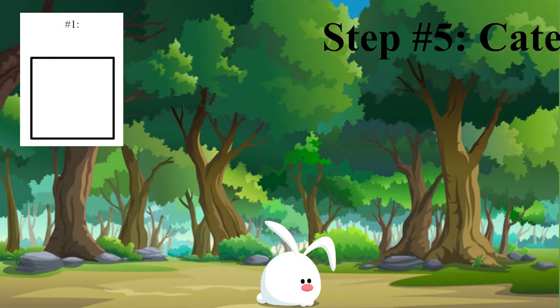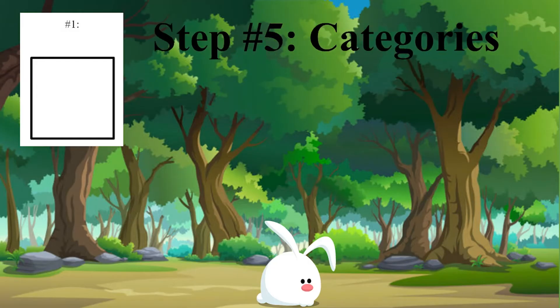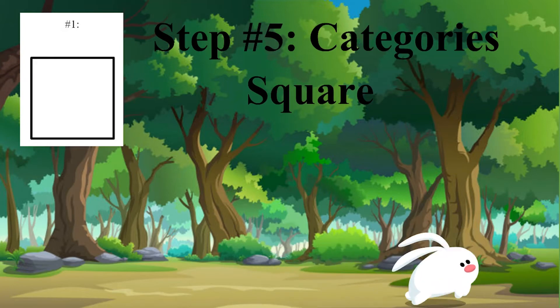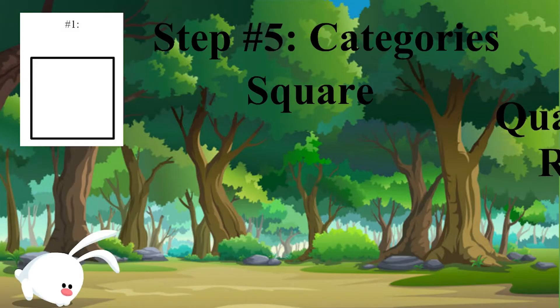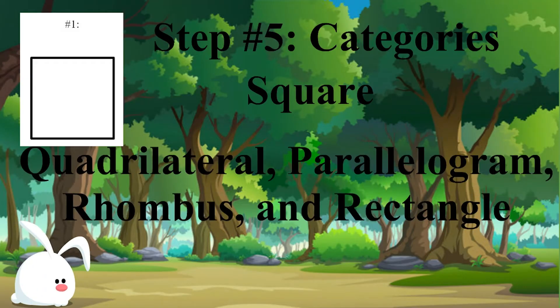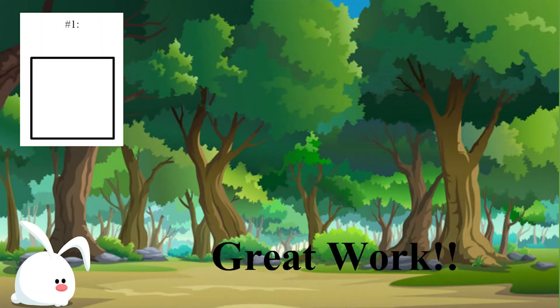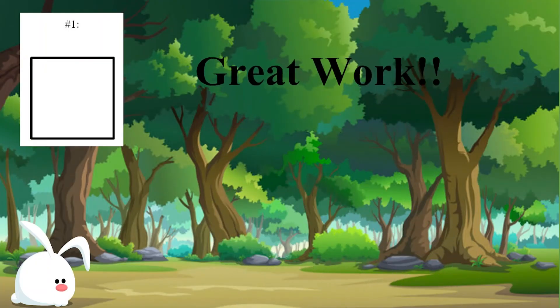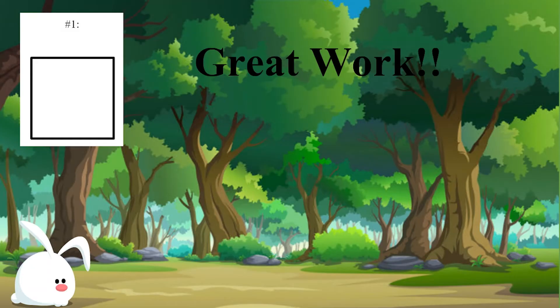Now, from all this different information that we've collected, we can finally put this figure into a category. By now you should have figured out that this figure is, in fact, the square. If you look at the square on the hierarchy chart, we can put this into the quadrilateral category, the parallelogram category, rhombus category, and the rectangle category — so it's under all the categories in the shape except kite and trapezoid. Isn't that interesting? Great work, you guys did awesome!